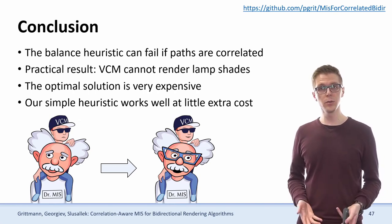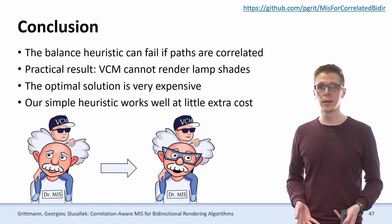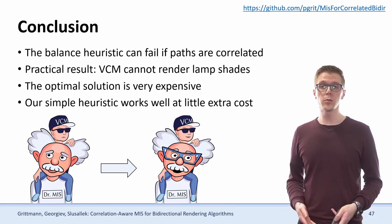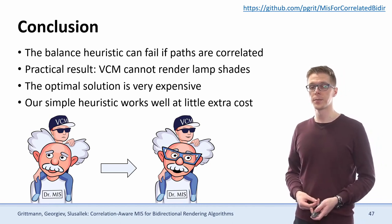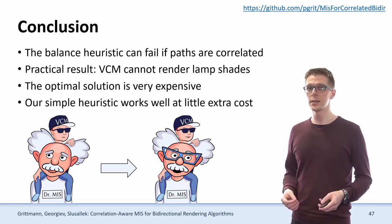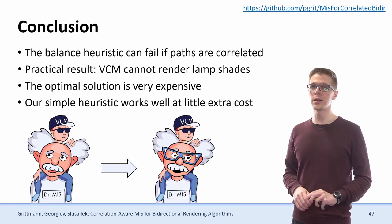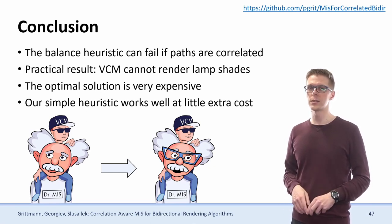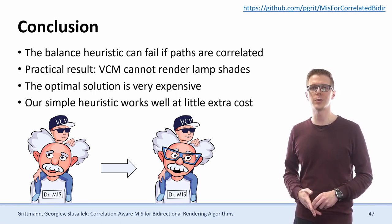In conclusion, we've seen that the balance heuristic can break if we have correlated paths. As a practical result, VCM might not work all that well if you have scenes with lampshades, and the optimal solution for that problem can be quite expensive. Our simple heuristic handled such cases very nicely without any additional overhead, and it consistently performs better than the balance heuristic in all our test scenes for VCM. Thank you for your attention and I'm looking forward to an interesting discussion.